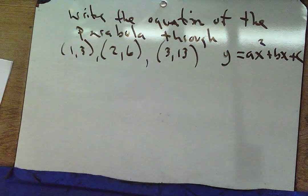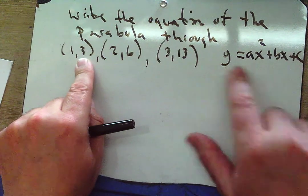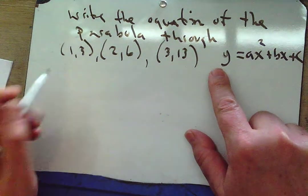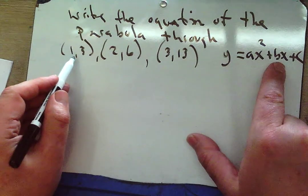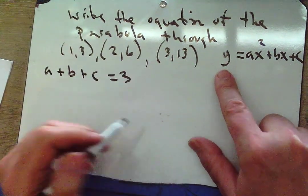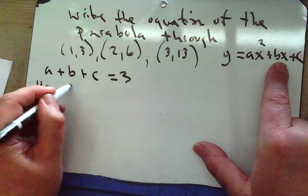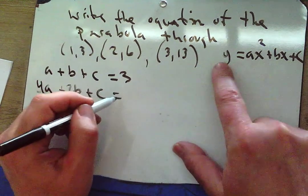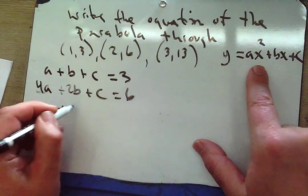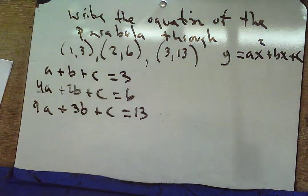Remember: the first coordinate is x, the second is y. Some students mix these up. Plugging in (1,3): a + b + c = 3. Plugging in (2,6): 4a + 2b + c = 6. Plugging in (3,13): 9a + 3b + c = 13.